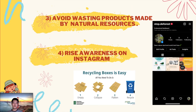Third, avoid wasting products made from natural resources. People can help to stop deforestation by avoiding the use of products which came from natural resources and choosing to use recycled products. Fourth, raise awareness on Instagram. Our group have created an Instagram account to raise awareness on deforestation and encourage people to use recycled products.